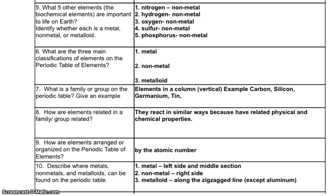Here we've got questions 5 through 10 displayed for us. Number 5. What five other elements, the biochemical elements, bio meaning life, are important to life on Earth? Bio means life. Identify whether each is a metal, non-metal, or metalloid. And here we've got nitrogen, hydrogen, oxygen, very important for those humans, produced by our green plants on Earth. Sulfur and phosphorus. And you can see that they are all non-metals, biochemical elements.